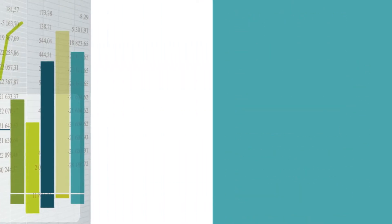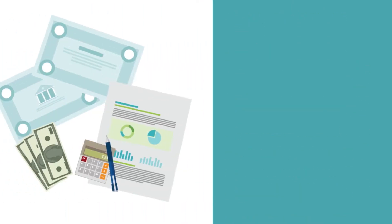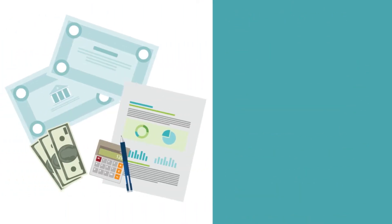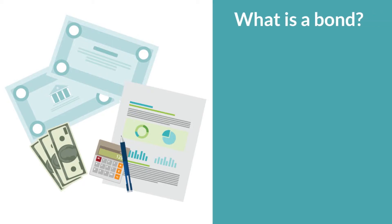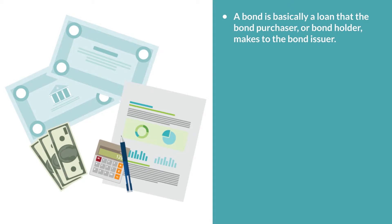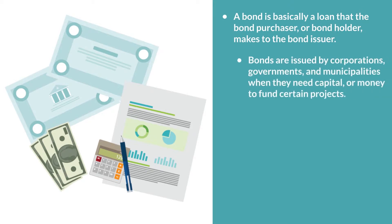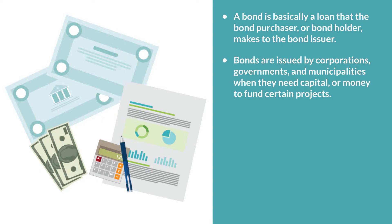The bond market is a very complex and large market providing many investment options. A bond is basically a loan that the bond purchaser, or bond holder, makes to the bond issuer. Bonds are issued by corporations, governments, and municipalities when they need capital or money to fund a certain project. So if you buy a government bond, you are essentially lending money to the government. If you buy a corporate bond, you are lending money to that specific corporation.